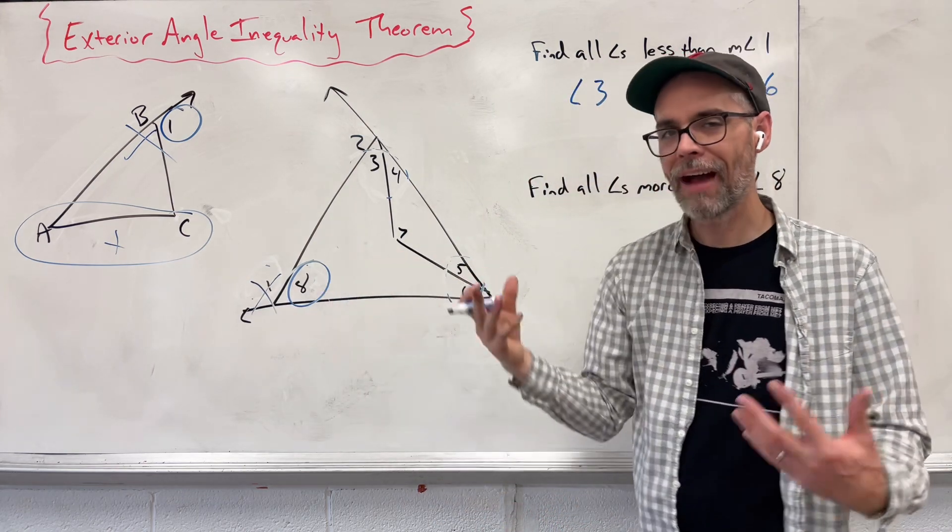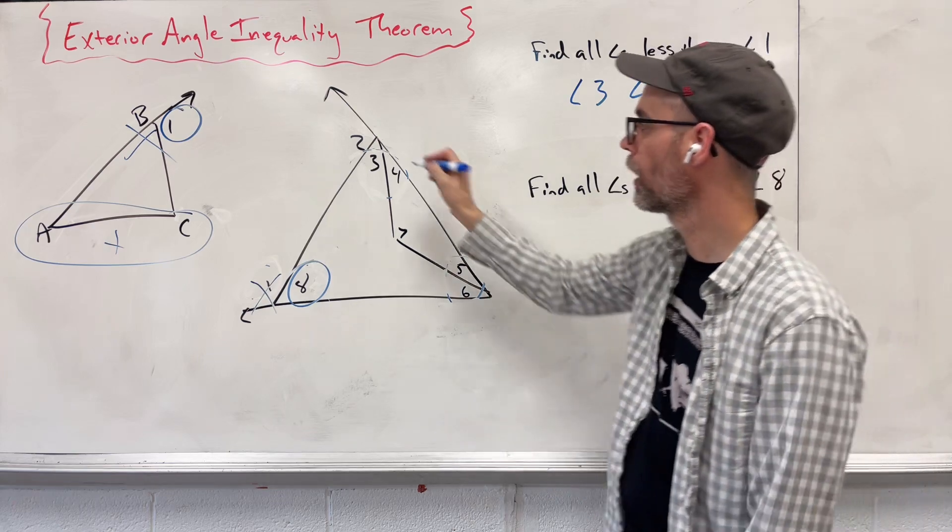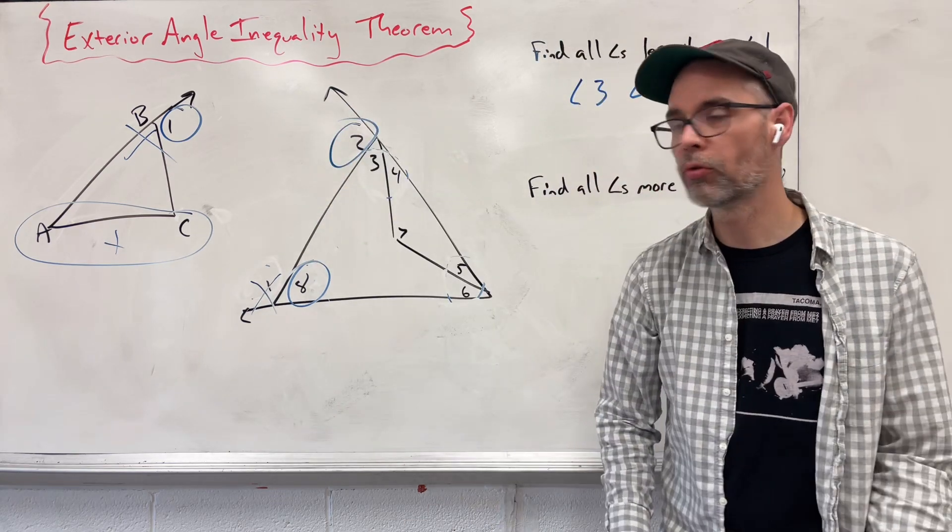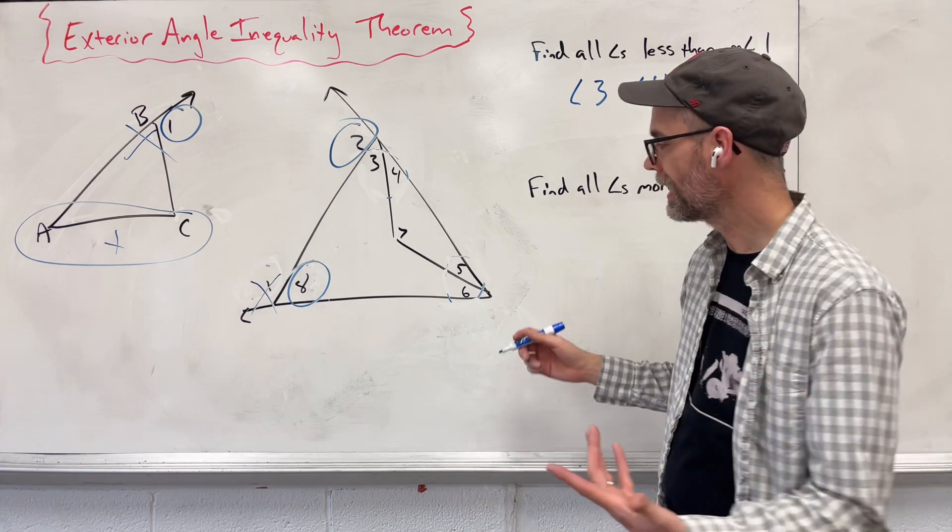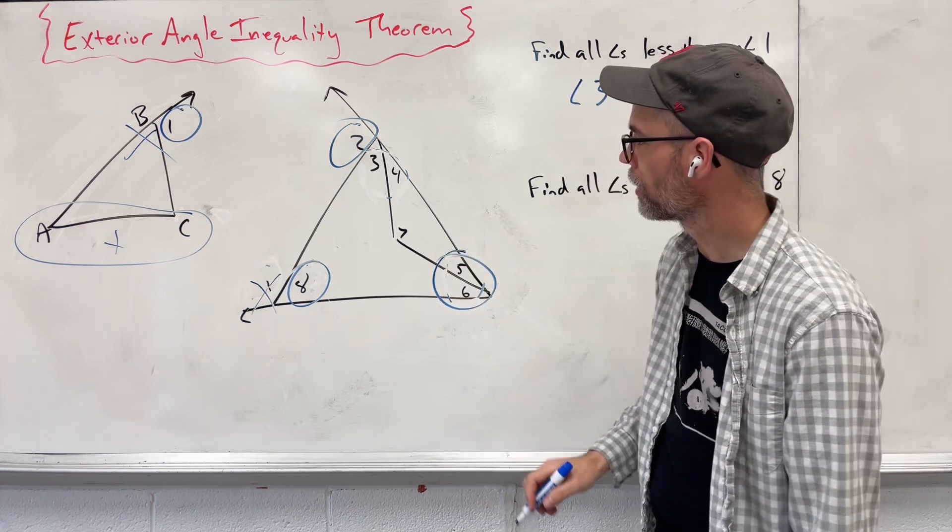Since that's an inside angle, I have to have an exterior angle somewhere. That's going to be angle 2 now. And then we have to have another opposite interior angle, which is going to be these.